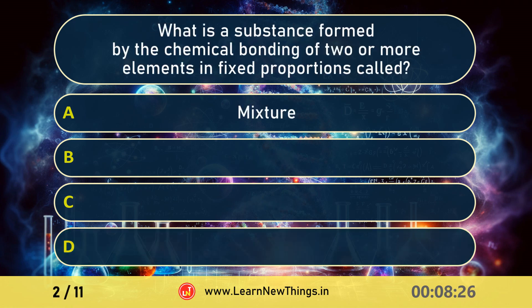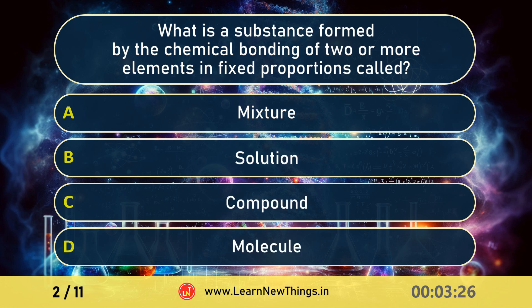What is a substance formed by the chemical bonding of two or more elements in fixed proportions called? Compound.